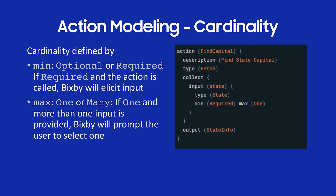Let's talk about action modeling and cardinality. In my example I have this action find capital and I'm collecting a state. You see it says min required and max one — that's the cardinality. Min required means I need at least one, and max one means one. I can also have the min be optional, which means zero is valid, and the max be many, meaning as many as I want. So min optional and max many would mean zero to as many as I want.